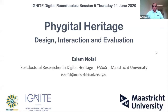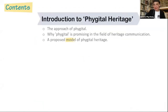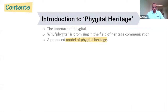The unit is called Vegetal Heritage Design, Interaction and Evaluation, and it consists of three lessons. The first lesson introduces the approach of Vegetal with a detailed argumentation about why this approach is promising in the field of heritage, and ends with a proposed model of Vegetal Heritage.